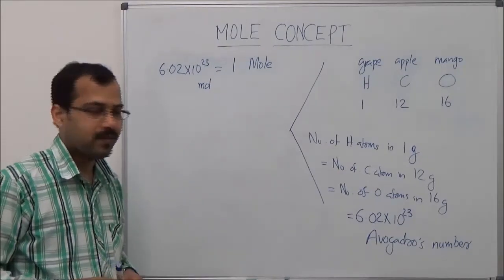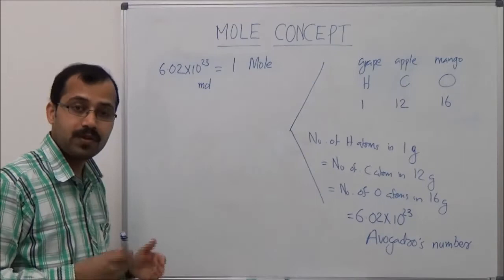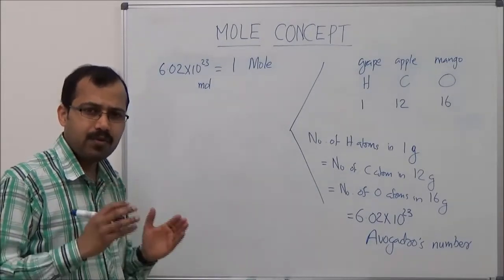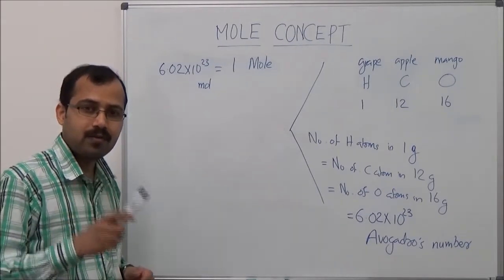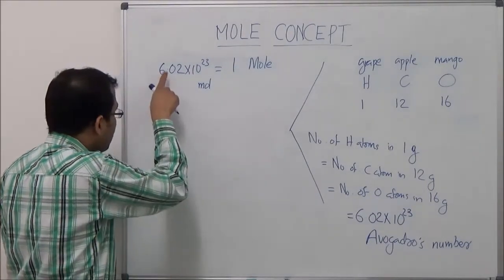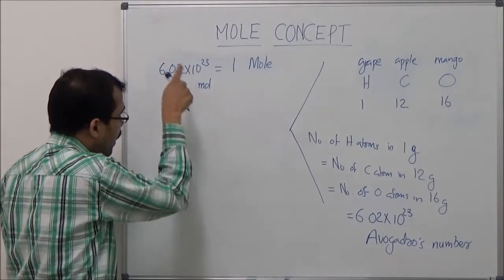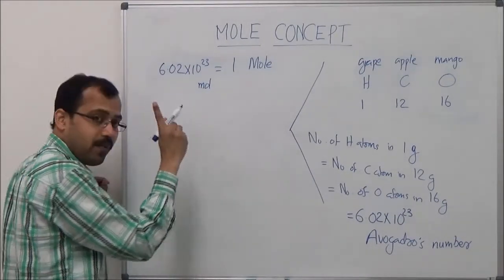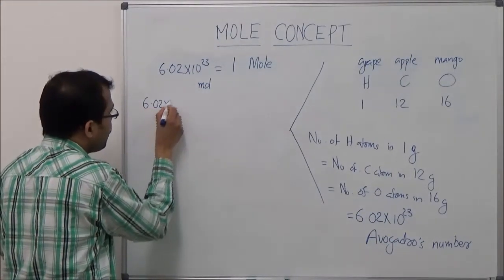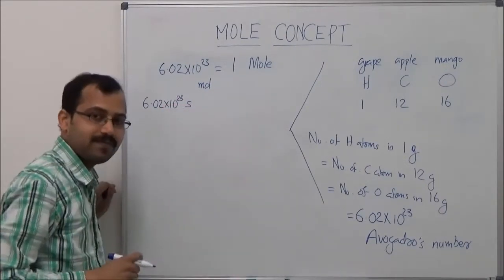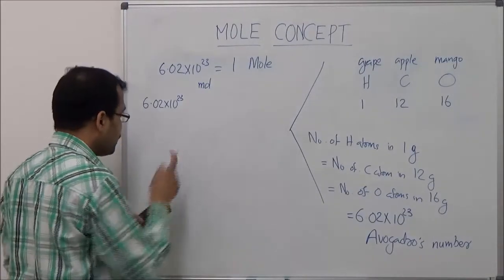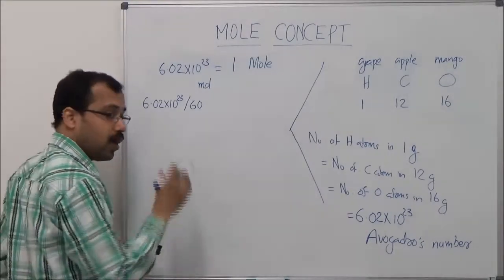How big is this number — 6.02 × 10²³? In order to understand this, let's consider: I have to count 1 mole of apples and I will count 1 apple per second. So to count 6.02 × 10²³ apples, I would need 6.02 × 10²³ seconds. Simplifying: dividing by 60 gives minutes, dividing by 60 again gives hours, and dividing by 24 gives days.